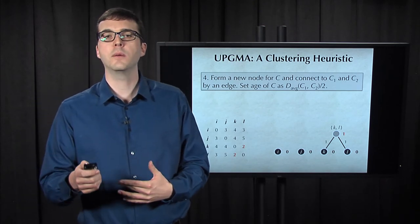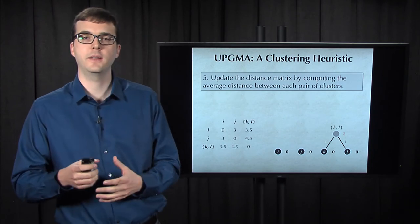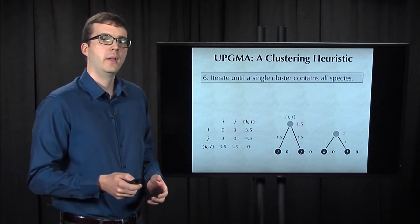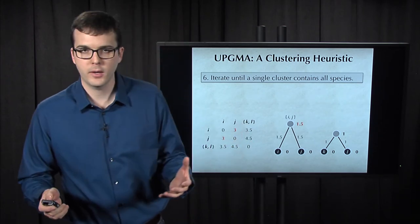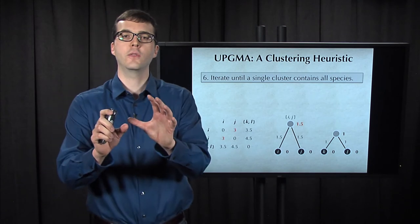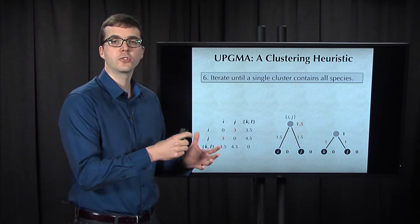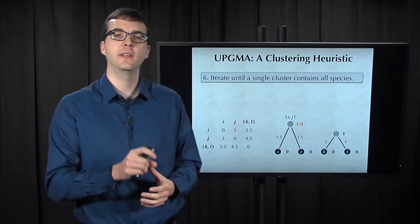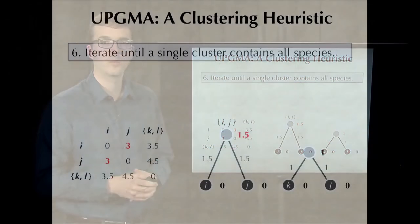We then recompute the average distance between each pair of clusters and we form an updated distance matrix. Now we then just begin this process over, choosing a minimum element of our matrix, merging the two associated clusters, forming a new node for the merged clusters, which here is IJ, and then assigning the age of this node as half of the distance value from the matrix, which was 3 here, which gives us an age of 1.5.